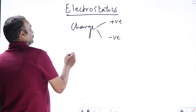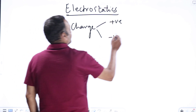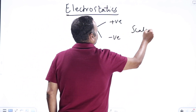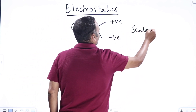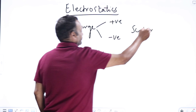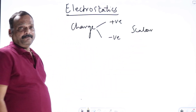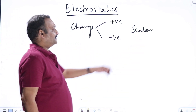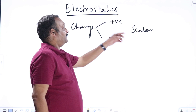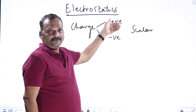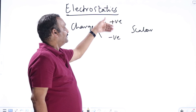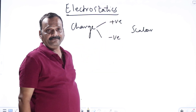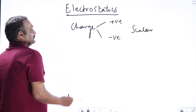This charge is a scalar quantity — it has only magnitude and no direction. Charge is a scalar quantity. It is found to be of two types: one type is named positive, another type is named negative.